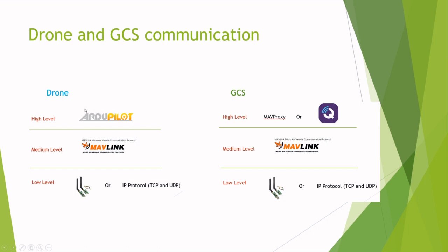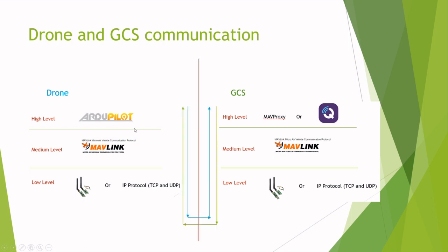And ArduPilot will say, hey, we just got this MAVLink message telling us to land. I'm going to go find the appropriate code that needs to get run in the ArduPilot code base in order to make that happen. And this can work bi-directionally — the drone can send us information through the same process, and the ground control station can use that process as well.